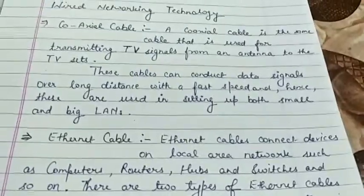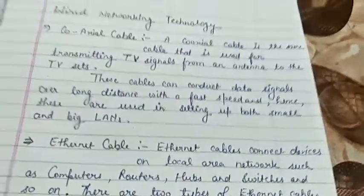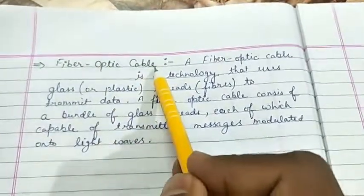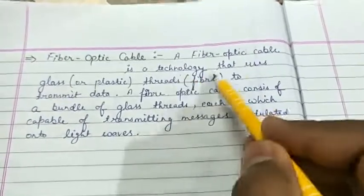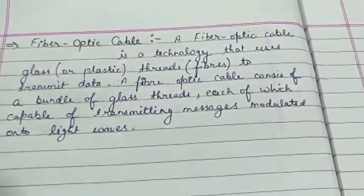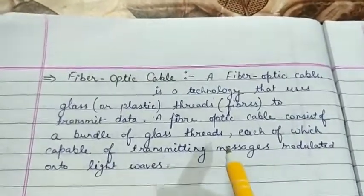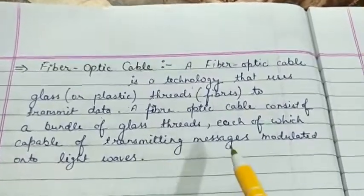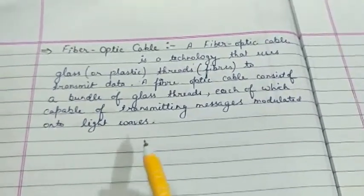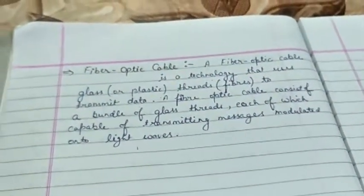The figures of the coaxial cable and ethernet cable you can see in a PDF file or in your book. Now, a fiber optic cable is a technology that uses glass or plastic threads, called fibers, to transmit data. It consists of a bundle of glass threads, each capable of transmitting messages modulated onto light waves. That is why the transmission rate of fiber optic cable is higher than coaxial cable and ethernet cable.